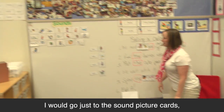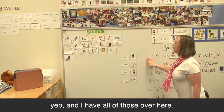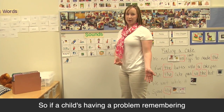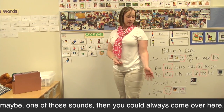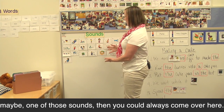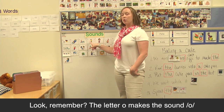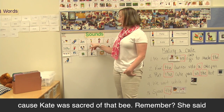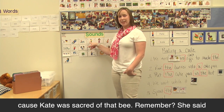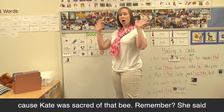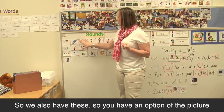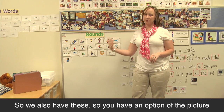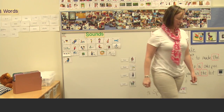I have all of those over here. If a child is having a problem remembering one of those sounds, you could come over here. For example, the letter O makes a sound O, because Kate was scared of that. So you have an option of the picture card or the grapheme.